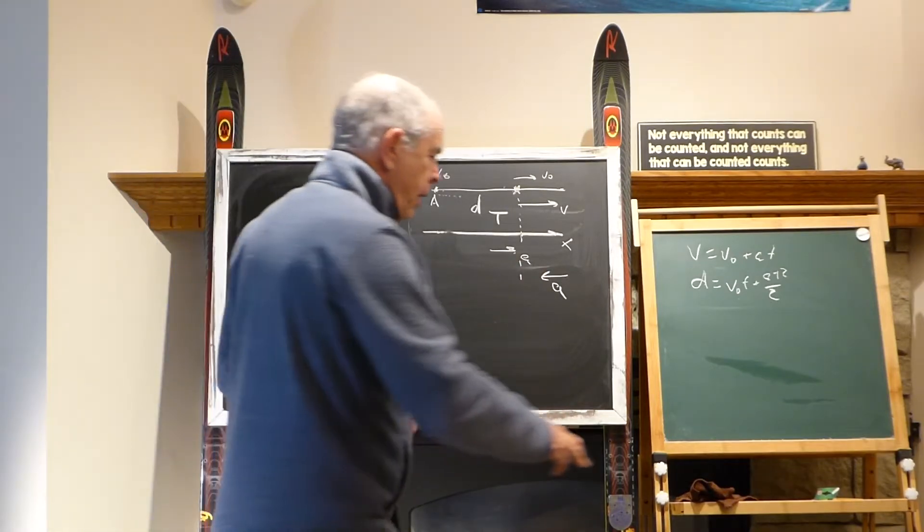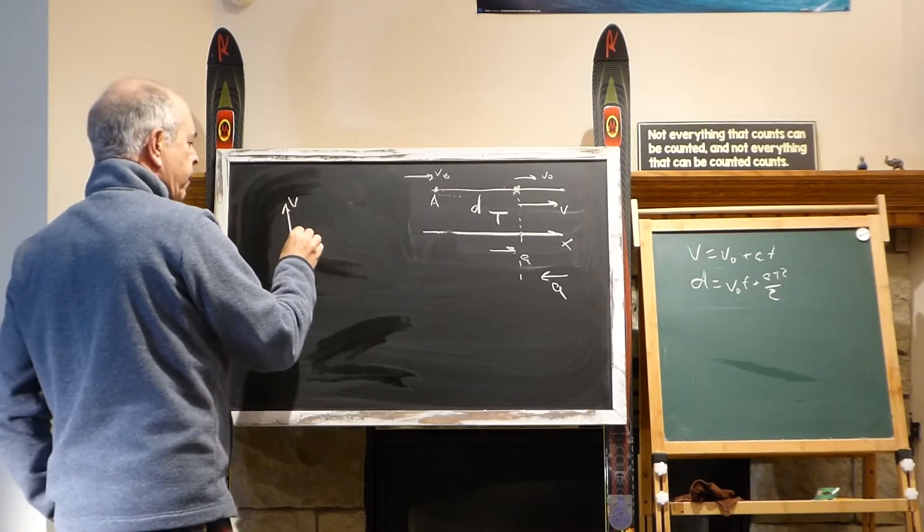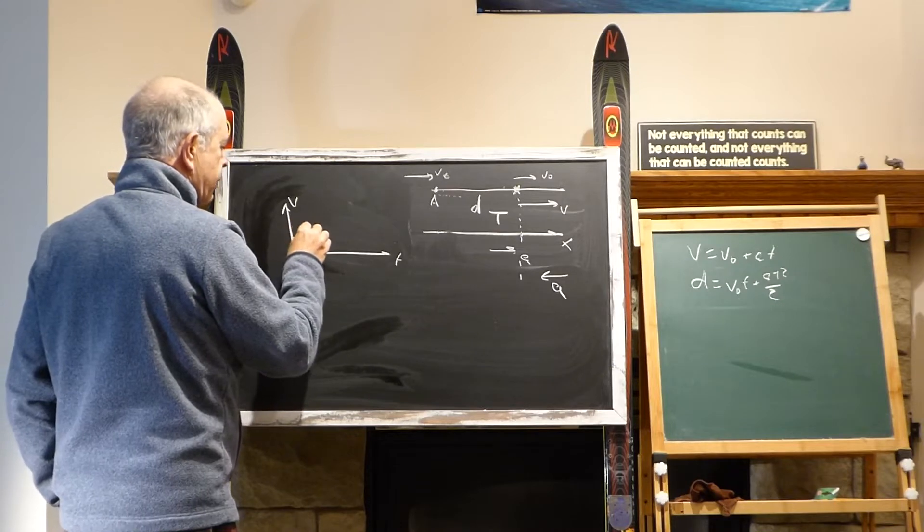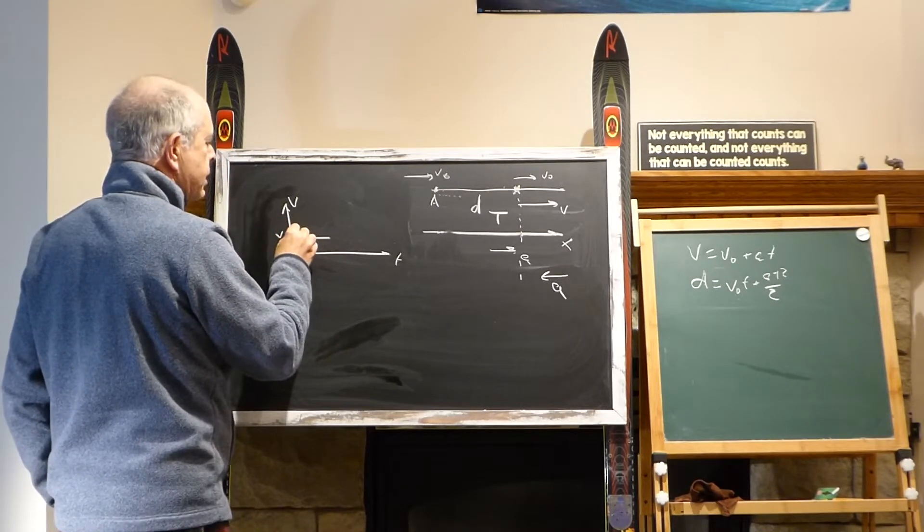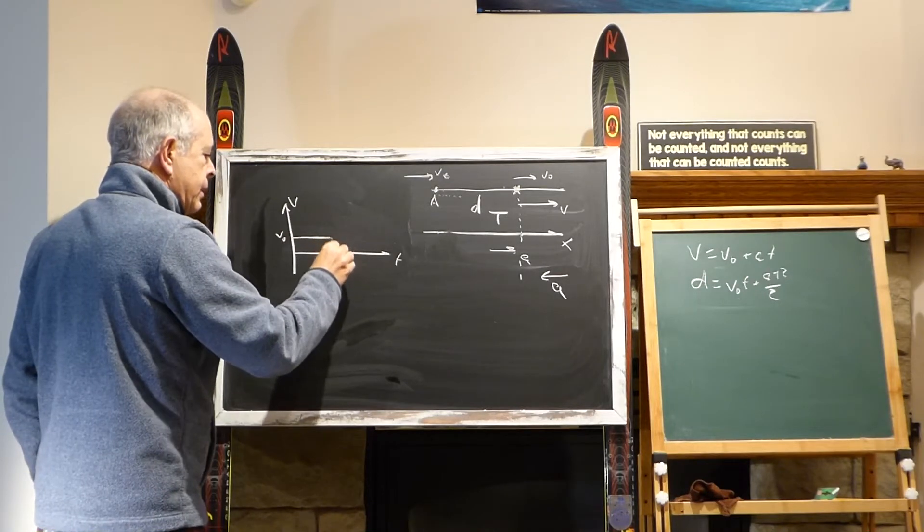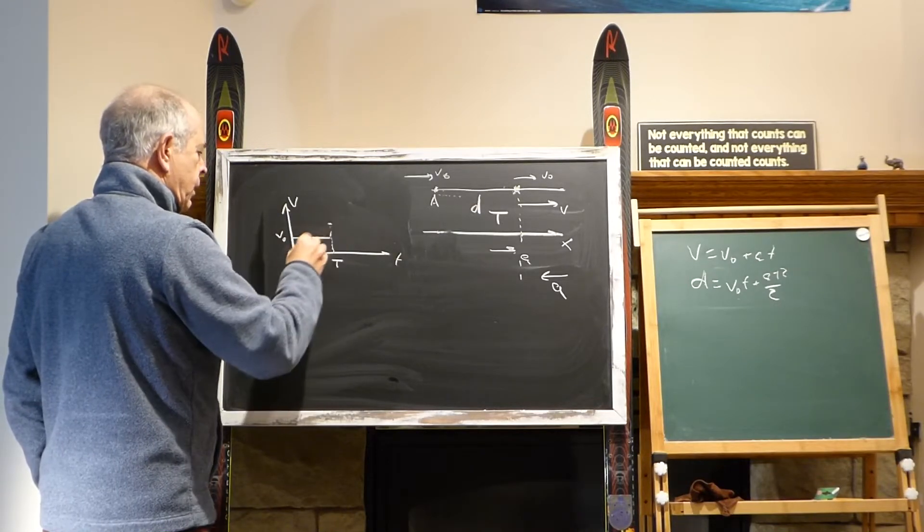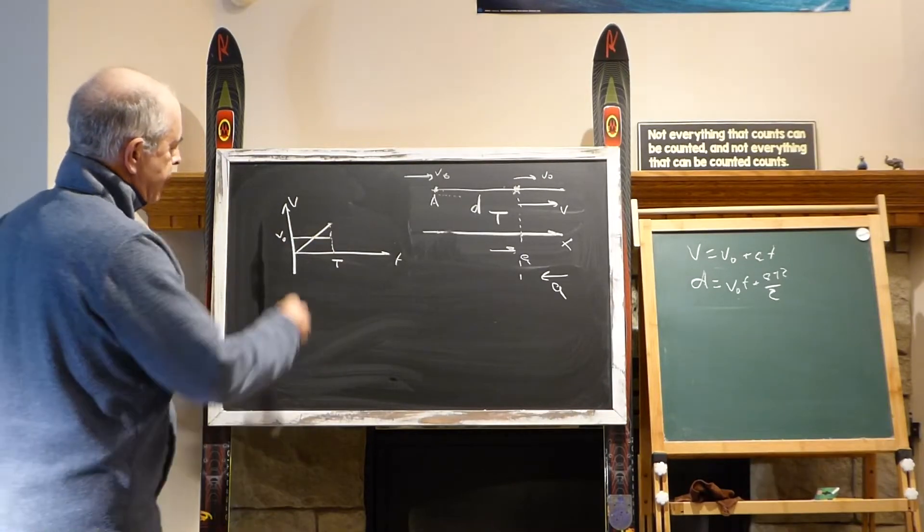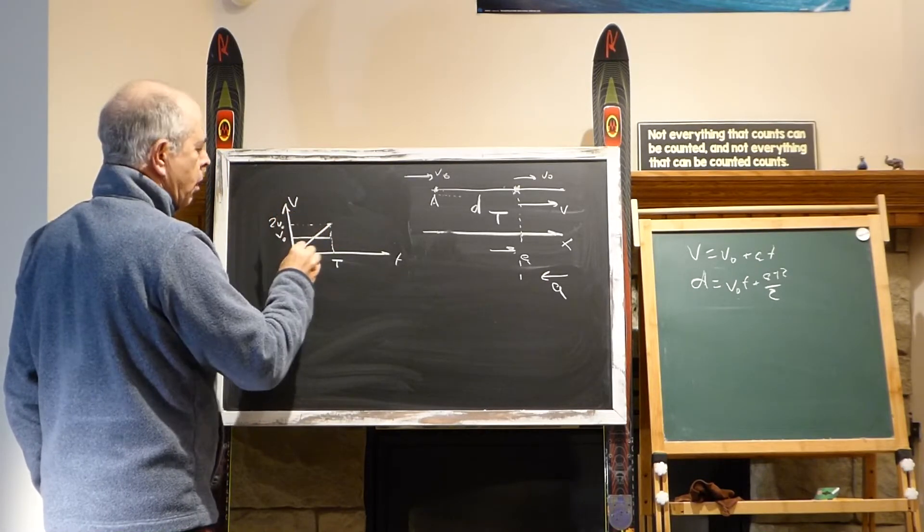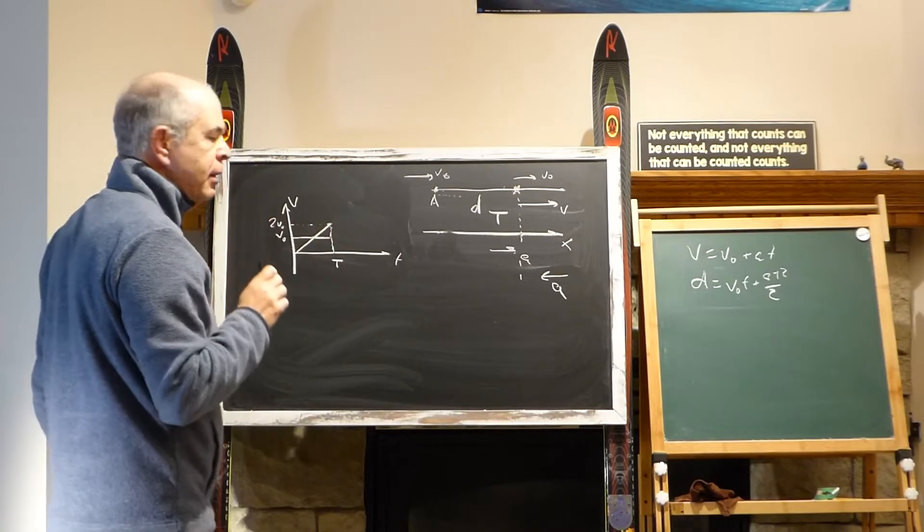Let's start with the same thing. Let's draw the v graph, v over t. This is v0. This is how the graph of the bicycle looks. v0 doesn't change, so it's a straight line horizontal. This all happens after time t, simultaneously. This is how the speed of the car goes, and it reaches 2v0.